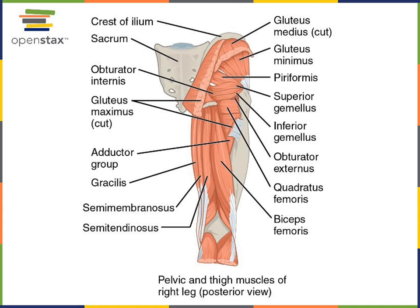Now moving to a posterior view of the femoral region, we have the hamstrings muscle group. There are semimembranosus, and just superficial to semimembranosus on the medial side is semitendinosus, and then on the lateral side is biceps femoris. Semimembranosus, semitendinosus, and biceps femoris are the hamstrings muscle group that performs the action of flexion of the tibiofemoral joint, working as antagonist to the quadriceps femoris group.